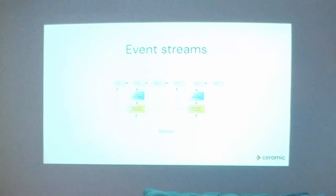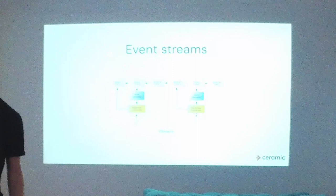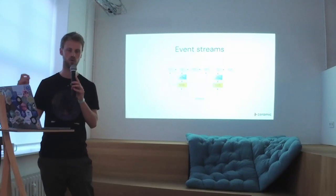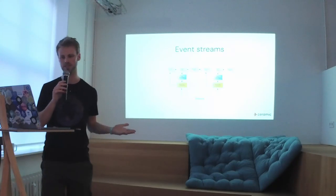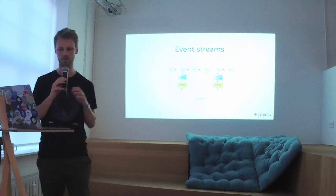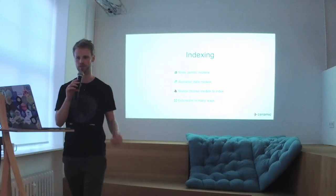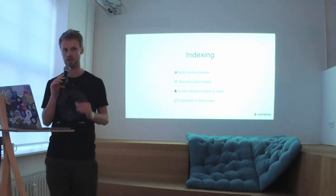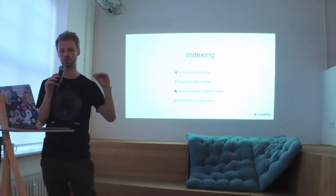We periodically anchor these event streams into the blockchain, which is key for security because we get secure timestamps. You might wonder: don't I need to make a transaction every time I anchor into the blockchain? It's pretty simple to get around that. We just take a bunch of updates to a bunch of different streams, build a Merkle tree or some sort of vector commitment, and put the root of the tree or vector commitment on-chain. So we can group a bunch of updates and put them on the blockchain together.